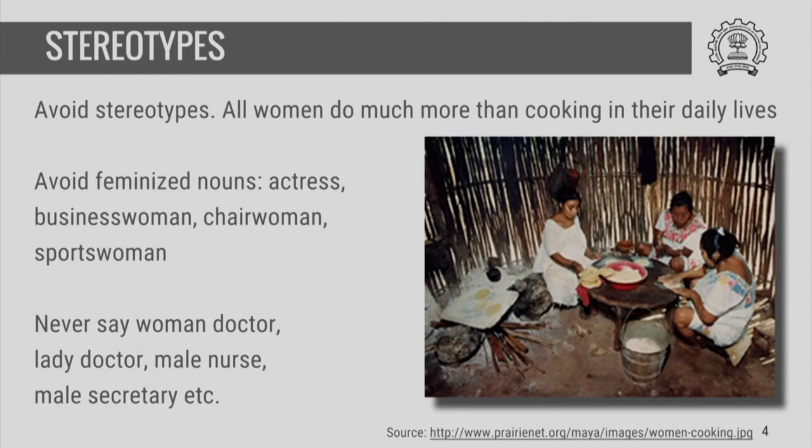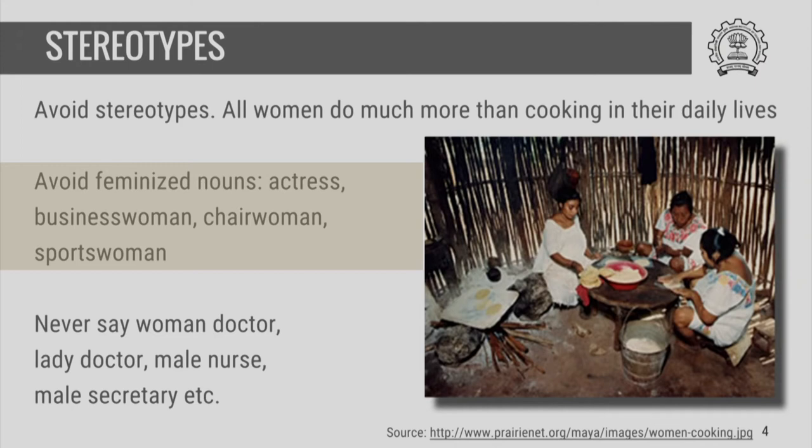To represent women primarily by certain activities that they do, such as cooking, is to bring in stereotypes. Likewise, feminized nouns such as actress, sportswoman, businesswoman, or chairwoman are also not acceptable, because in all of these cases we are referring to the profession of that person — the work that person does. The gender is secondary here.